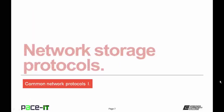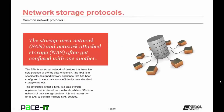Let's move on to network storage protocols. First let's talk about the storage area network, or SAN, and the network-attached storage, or NAS, which often get confused. The SAN is an actual network of devices with the sole purpose of storing data efficiently. The NAS is a specifically designed network appliance configured to store data more efficiently than standard storage methods. The difference is that the NAS is a data storage appliance placed on a network, while the SAN is a network of data storage devices. It's not uncommon for the SAN to contain multiple NAS devices.